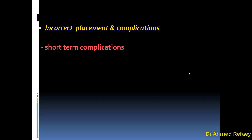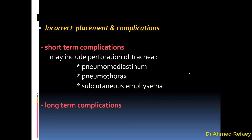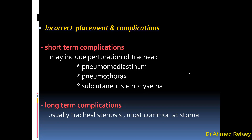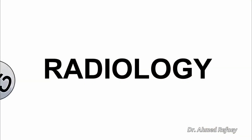Regarding complications of incorrect placement of the tracheostomy tube, we have short-term and long-term complications. Short-term complications include perforation of the trachea causing pneumomediastinum, pneumothorax, and subcutaneous emphysema. Long-term complications usually lead to tracheal stenosis, most commonly at the region of the stoma. This concludes everything regarding the endotracheal tube — both the endotracheal tube and tracheostomy tube. In the next episode we will cover the other lines and devices. Thank you very much.